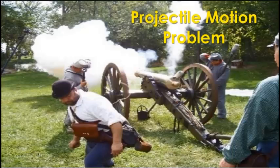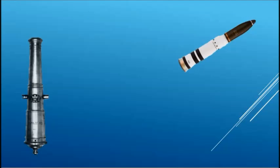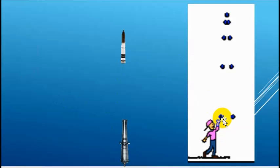Today's video is on projectile motion. We're going to talk about a cannon — hence the picture of a cannon firing a round. Today's question is going to address a cannon firing a round directly upward, which is very synonymous to throwing a ball up in the air.